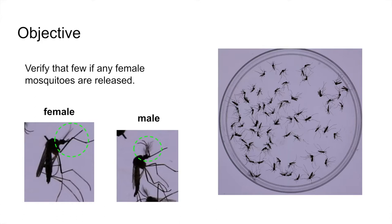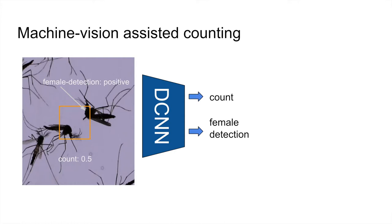The images on the left show the differences between males and females. The males are smaller and have fuzzy antennae, while the females are larger and have straight antennae. Note that we also have to deal with mosquitoes at all orientations, and often with overlap.